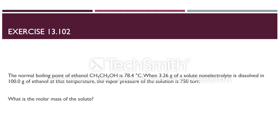The normal boiling point of ethanol CH3CH2OH is 78.4 degrees Celsius. When 3.26 g of a solute non-electrolyte is dissolved in 100 g of ethanol at that temperature, the vapor pressure of the solution is 750 Torr. Now the question is, what is the molar mass of the solute?